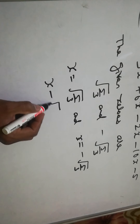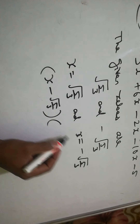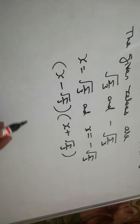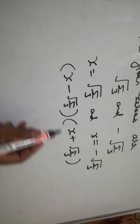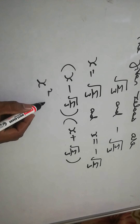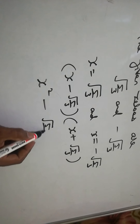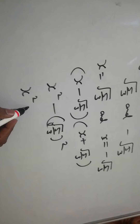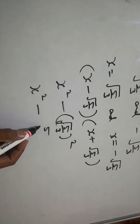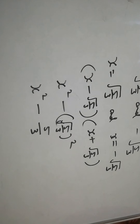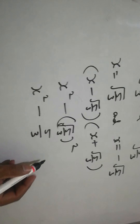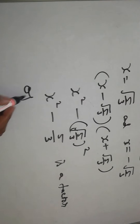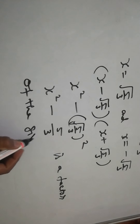We write (x - √(5/3)) and (x + √(5/3)). This is of the form (a - b)(a + b), so we apply the formula a² - b². So x² minus (√5)²/(√3)² gives x² - 5/3. This is a factor of the given polynomial.